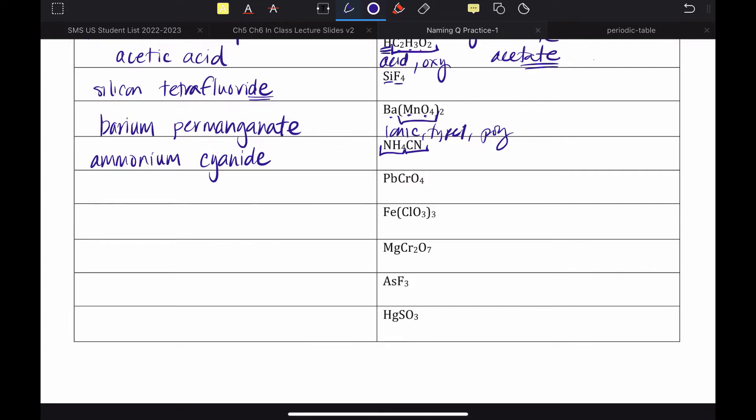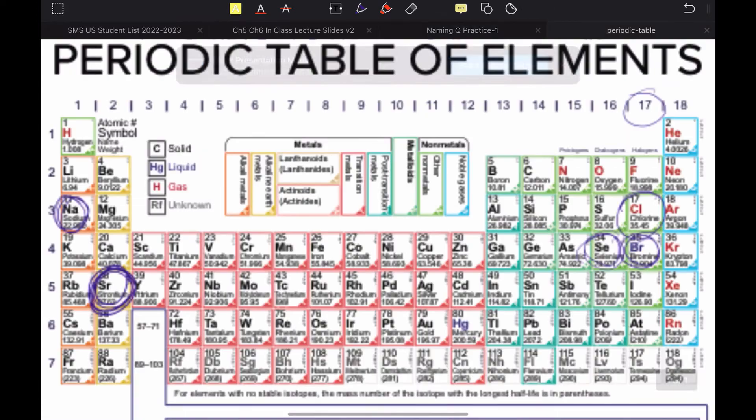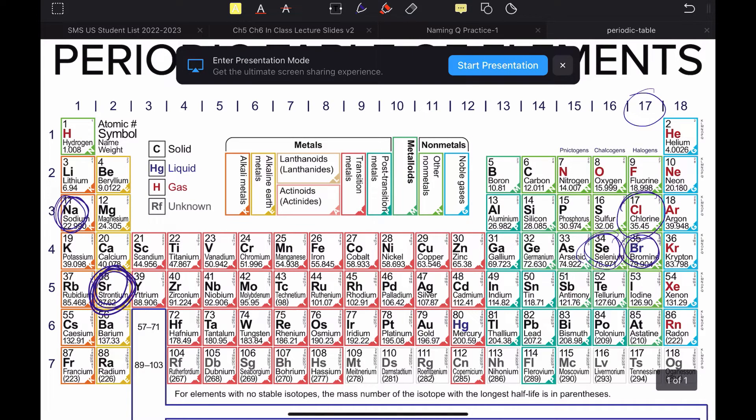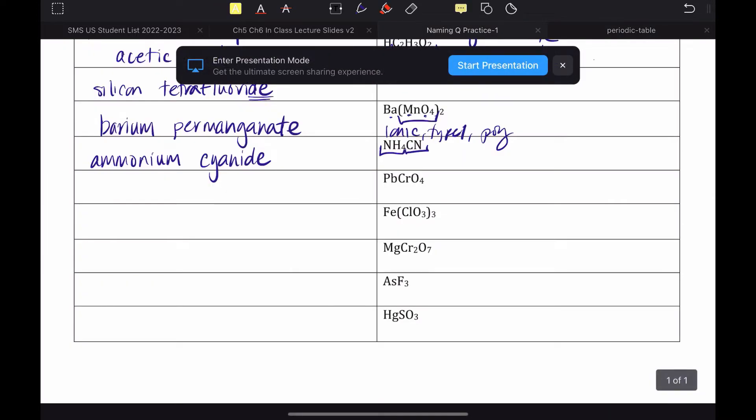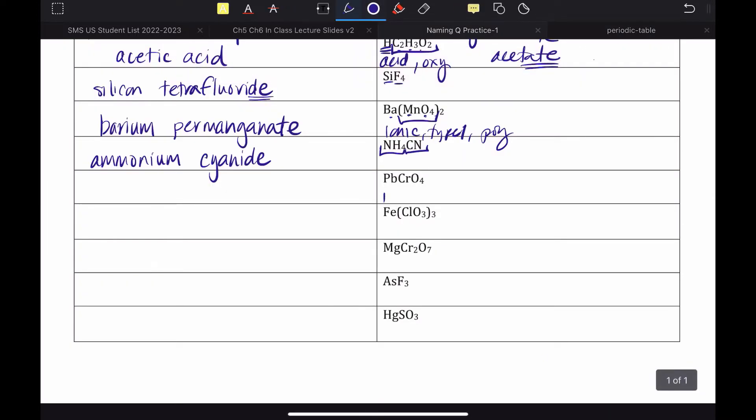Next up. We've got, again, lots of elements. We would go to our periodic table and find PB. It is a type 2 metal. So, if it's a type 2 metal, that means we are going to have to figure out its charge. So, we've got ionic, type 2 poly. So, we've got to work backwards to figure out its charge. I don't know the charge, but I do know I have one of them. The charge of chromate is negative 2. And I have one of those, which means that it must be lead 2. So, lead(II) chromate.